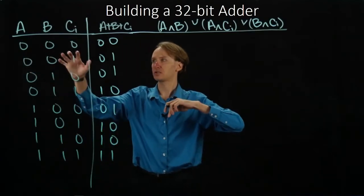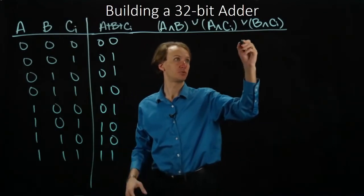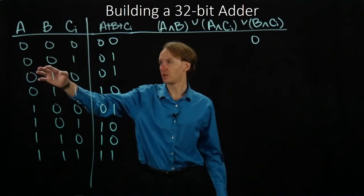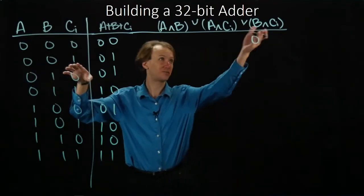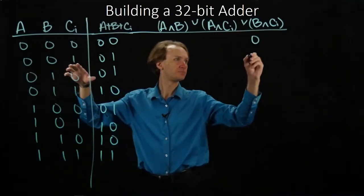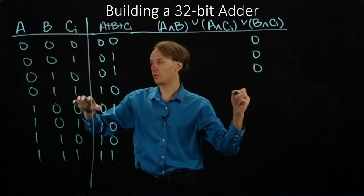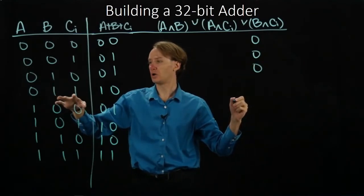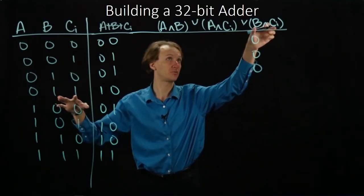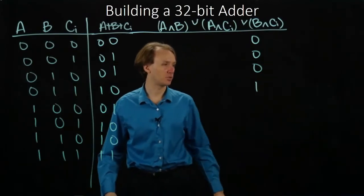So for the first case, all of my inputs are zero, so none of these three propositions will be true. So the results will also be zero. Here I've got one bit that's a one, but that's not enough to satisfy any of the conjunctions. Again, only one input is one. Here I have one and one, so B and carry-in are true. So this proposition is true, and since we're just ORing all of them together, the entire proposition will be true.